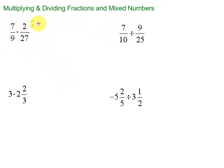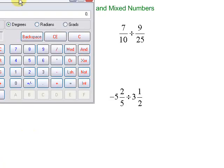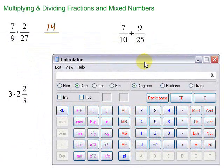So 7 times 2 is 14, over 9 times 27 — excuse me — which is 243.